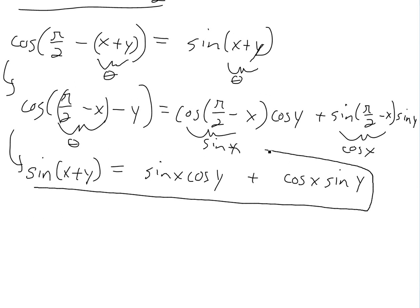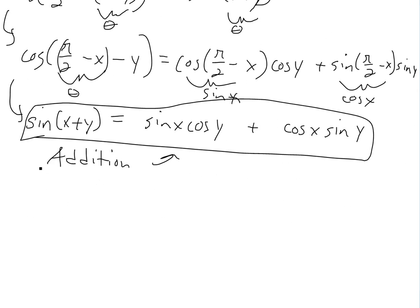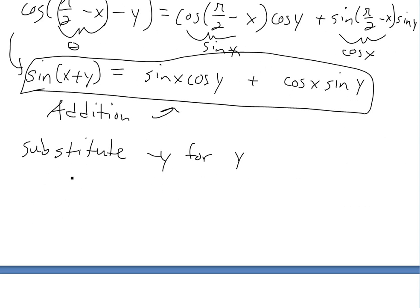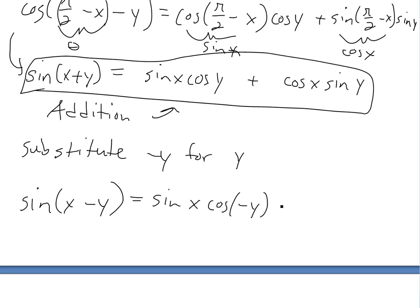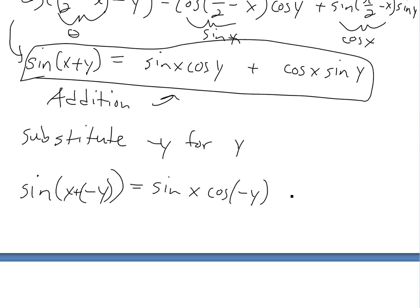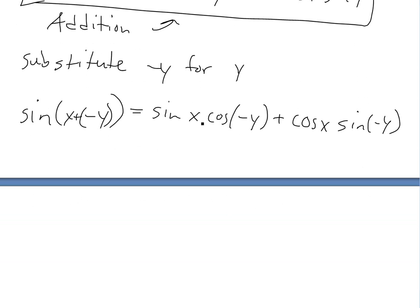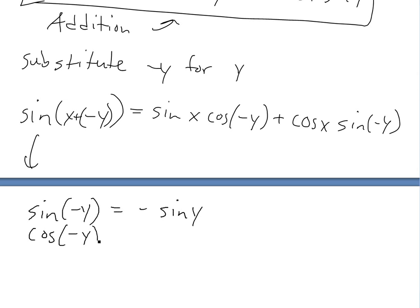So we just got the addition identity. To get the subtraction one, we just substitute negative y for y. So we'll have sine of x minus y equals sine x cosine of negative y plus cosine x sine of negative y. Now sine of negative y is an odd function, so it equals negative sine y. And cosine of negative y is an even function, so it equals cosine y.